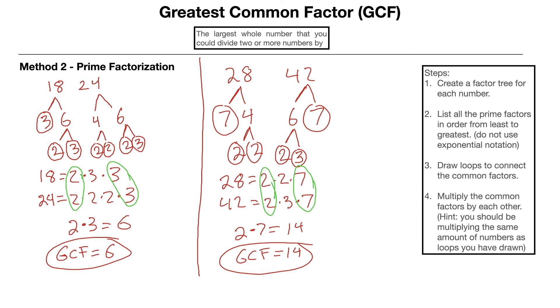Now we could also do this if there was a third number and then we would just have three lists and we would still be looking for what they have in common. But that's all you have to do to find the greatest common factor using the prime factorization.